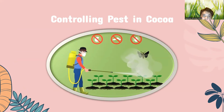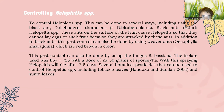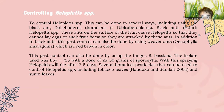Controlling Helopeltis SPP. can be done in several ways, including using black ants. Black ants disrupt Helopeltis SPP. on the surface of the fruit, so that they cannot lay eggs or suck fruit because they are attacked by these ants. In addition to black ants, control can also be done using red-brown paper ants and using Beauveria bassiana. The isolate used is BBV-725 at a dose of 25 to 50 grams of spores per hectare, and with spraying, Helopeltis will die after 2 to 5 days.